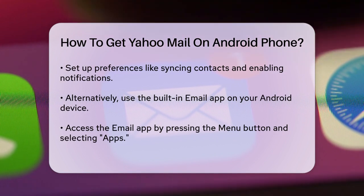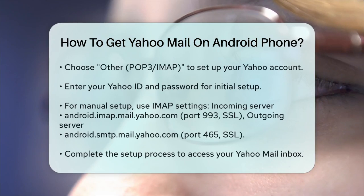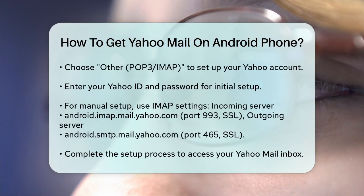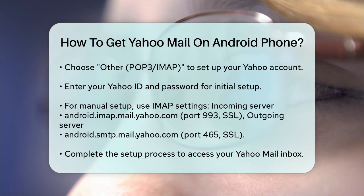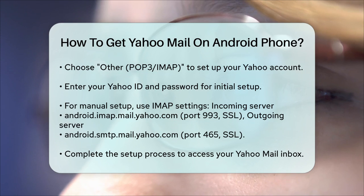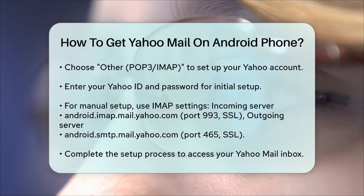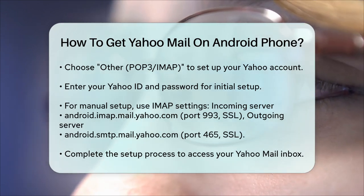Tap on Other, then POP3/IMAP, and enter your Yahoo ID and password. If you encounter any errors during the setup, you might need to do a manual setup. For this, select IMAP and enter the following server settings: incoming server is android.imap.mail.yahoo.com on port 993 with SSL security, and the outgoing server is android.smtp.mail.yahoo.com on port 465 with SSL security. Complete the remaining setup process and you'll be all set to use your Yahoo Mail account through the email app.